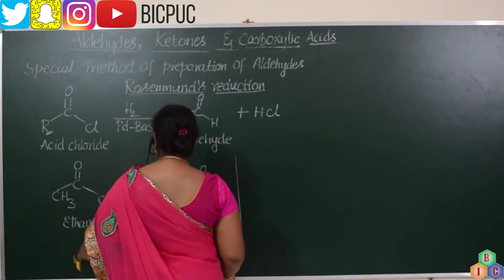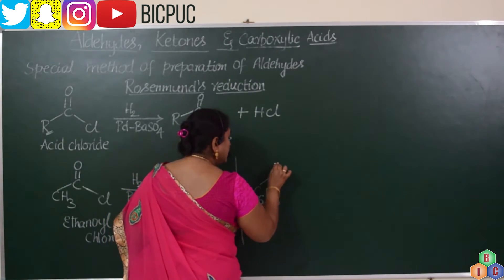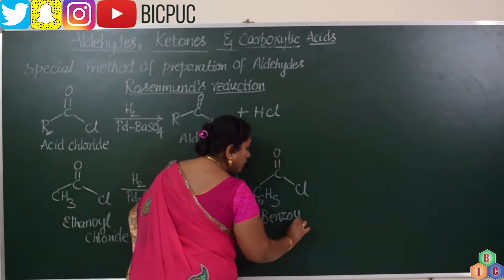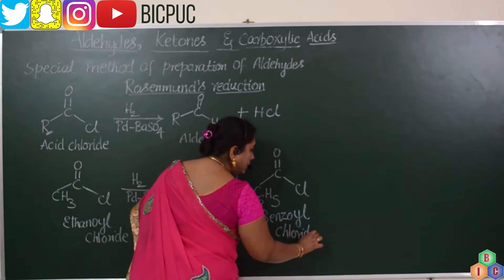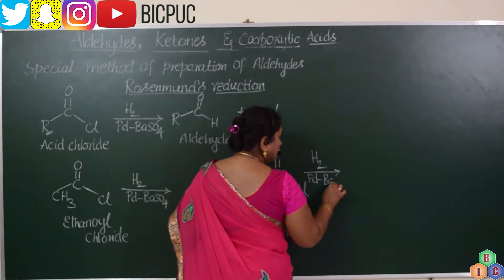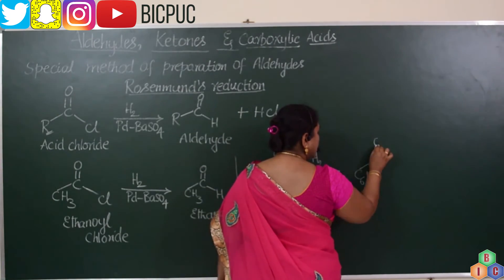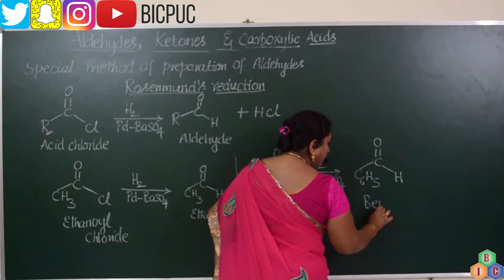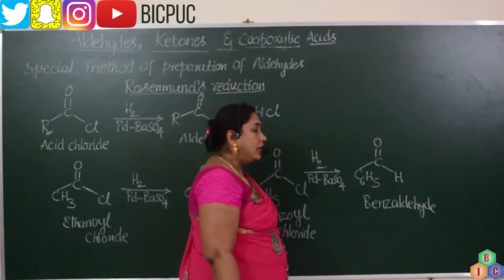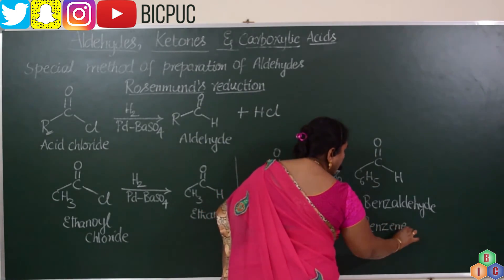Now let us take another example by replacing R with an aryl group — specifically a phenyl group. The compound is C6H5COCl, whose name is benzoyl chloride. It is reduced in the presence of palladium catalyst supported over barium sulphate to yield C6H5CHO. Benzoyl chloride is a sanctioned name; IUPAC has allowed us to continue using this name. Its correct IUPAC name is benzene carbaldehyde.